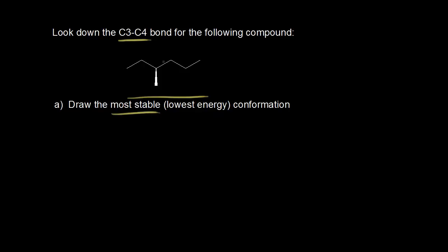Let's start by numbering our carbons. This must be carbon one, two, three, four, five, and six. If we look down the C3-C4 bond, that's this bond right here. We're gonna put our eye along this axis and stare down this way and draw what we see.